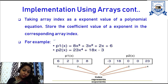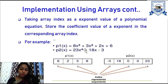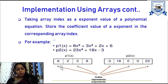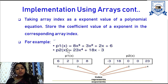The array index is taken as the exponent value, and the corresponding coefficient is stored at that index location. So coefficient 8 is stored at index 3, coefficient 3 is stored at index 2, coefficient 2 is stored at index 1, and coefficient 6 is stored at index 0. Similarly, for the polynomial equation 23x power 4 plus 18x minus 3, the highest exponent value is 4, so the array size is 4 plus 1 = 5.